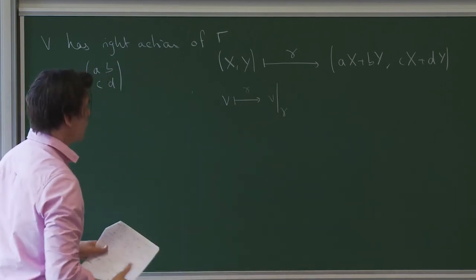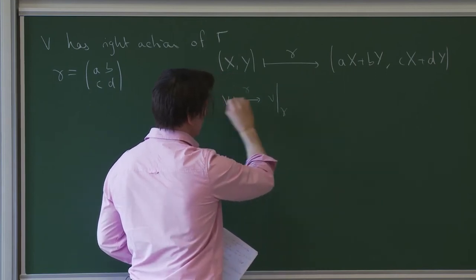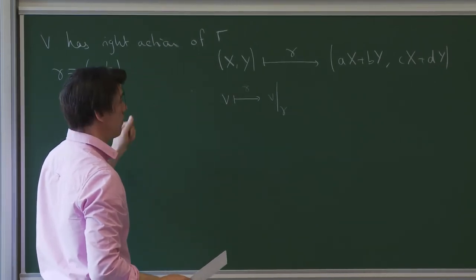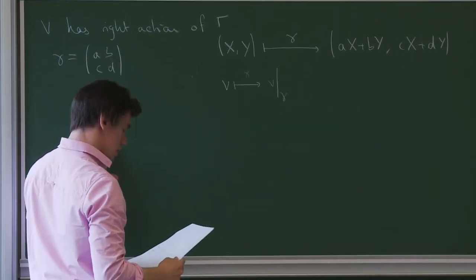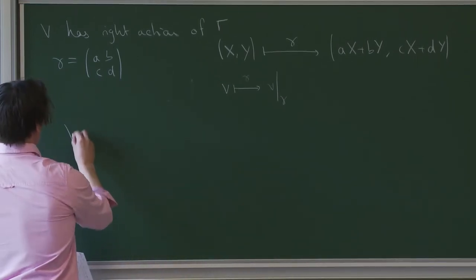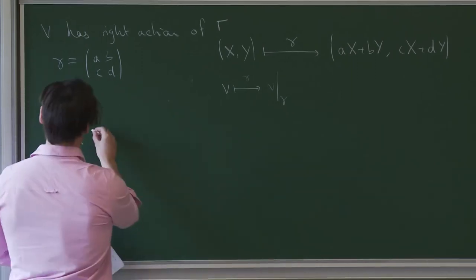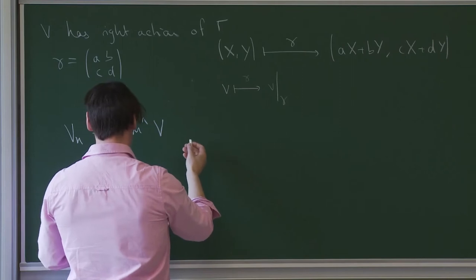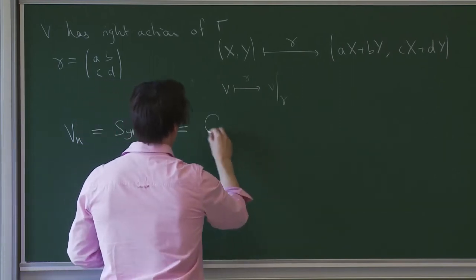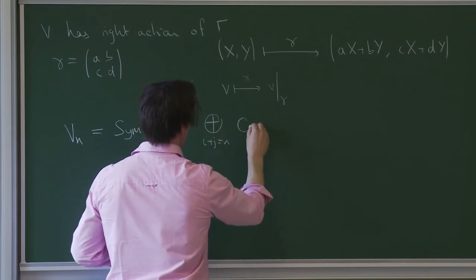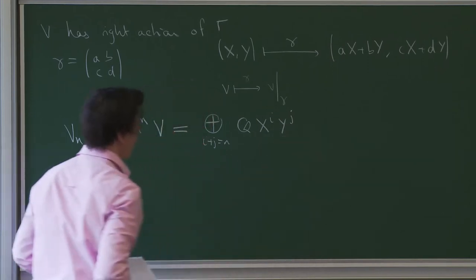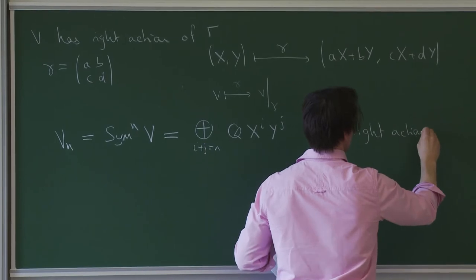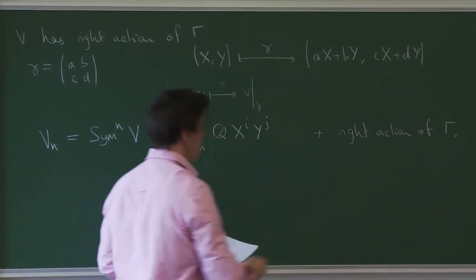The problem with right actions is that we write in English from left to right, and there comes a point where it becomes unworkable — but this is very good for now. The n-th symmetric power of this vector space is simply the space of homogeneous polynomials in two variables of degree n, plus the right action of gamma. And this is the convention I'm going to adopt.